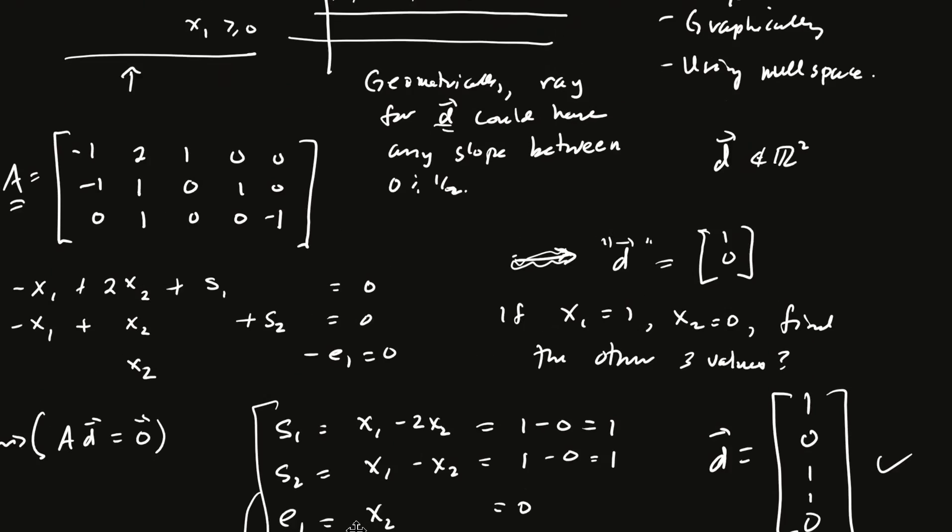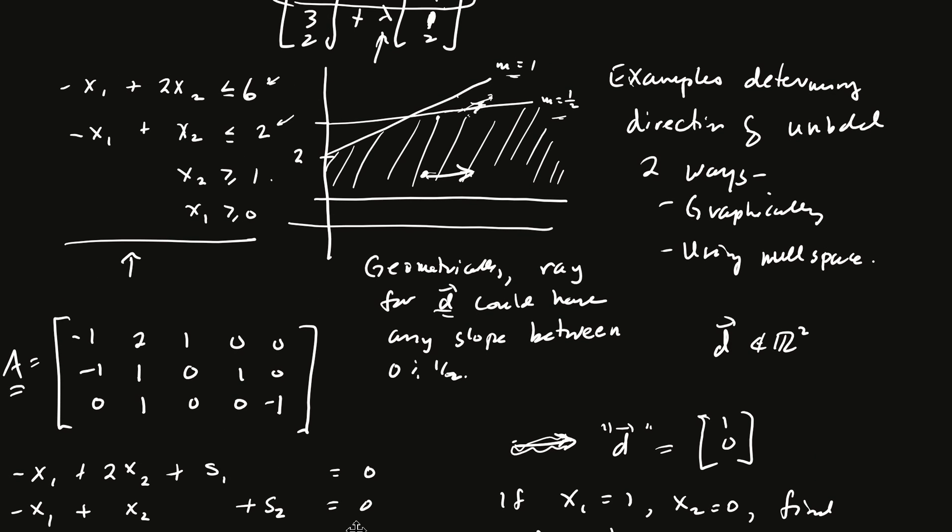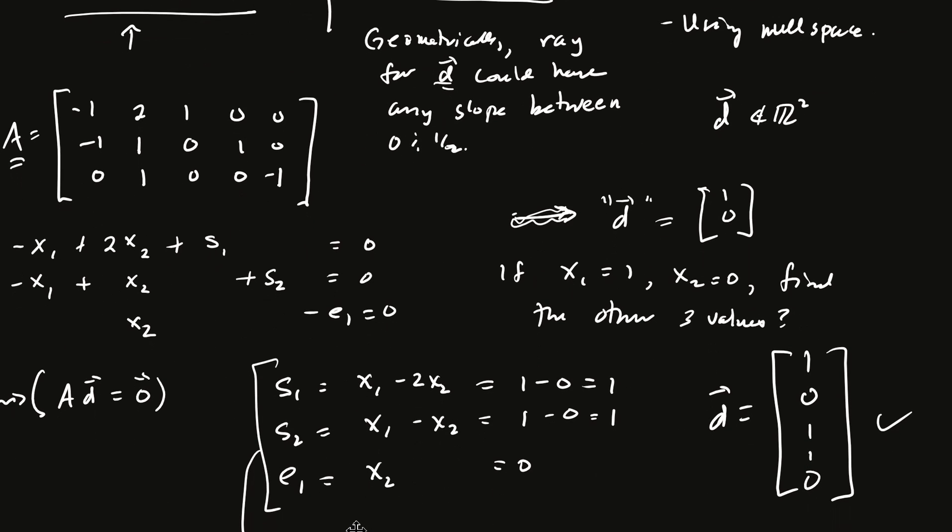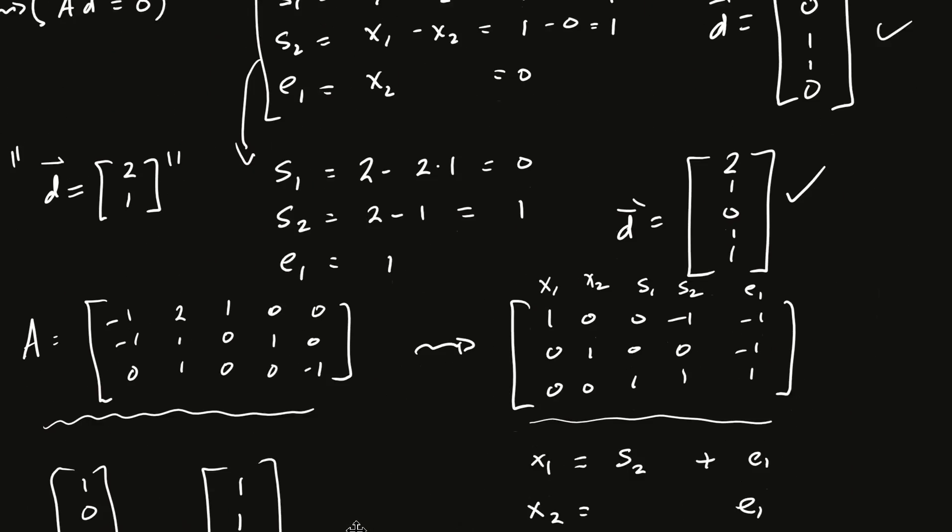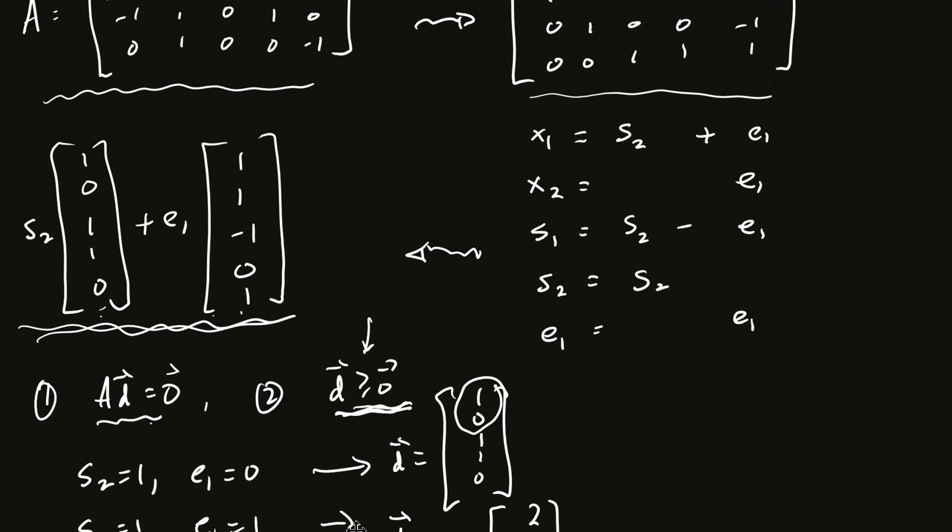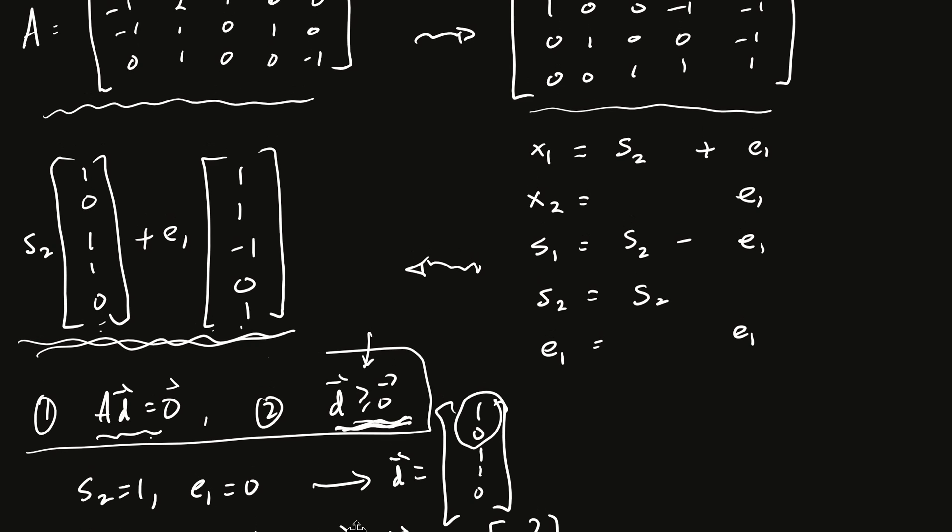So that is an example of determining the direction of unboundedness two ways. One way is to just look and see in the graph what's happening. But you have to be careful with that because the direction, or the vector D that we're talking about is actually in R5, not in R2. And so we have to adjust the equations a bit using our second piece of information. And that was that A times D must be 0, and D must be greater than or equal to 0. See you in the next video.